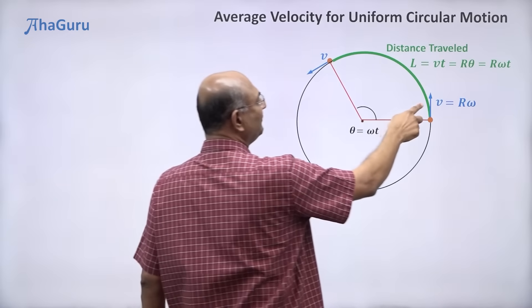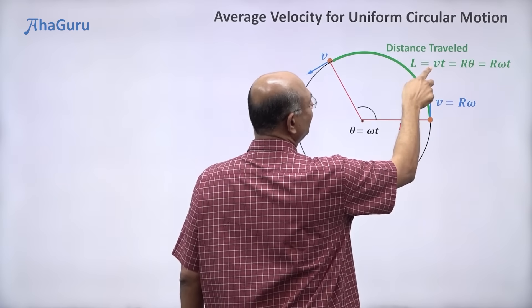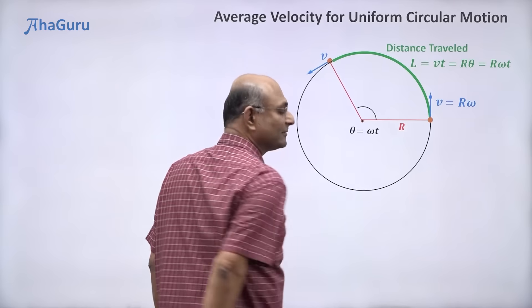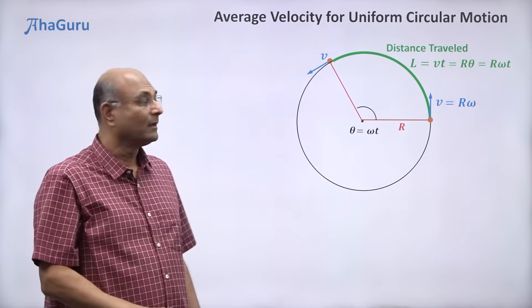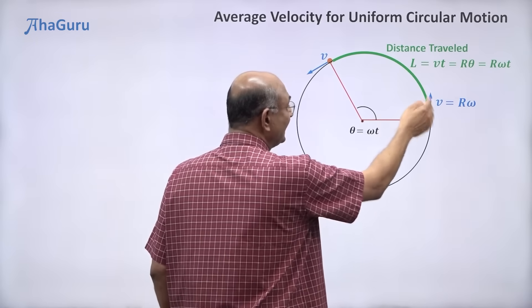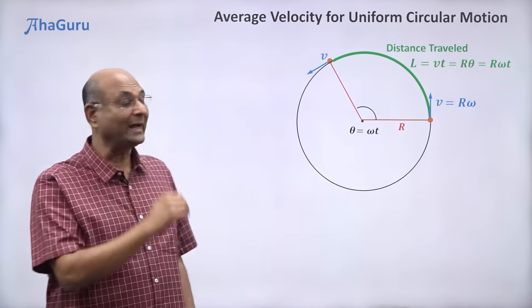Of course, you knew that v equals r omega. So if I put that v equals r omega here, that also gives me r omega t. So now we are talking about distance, the linear speed, and the angle turned.